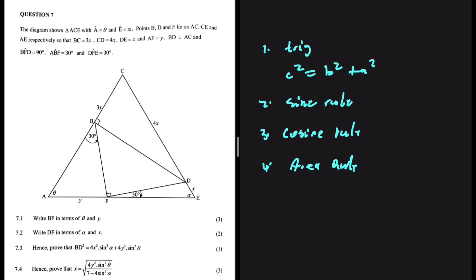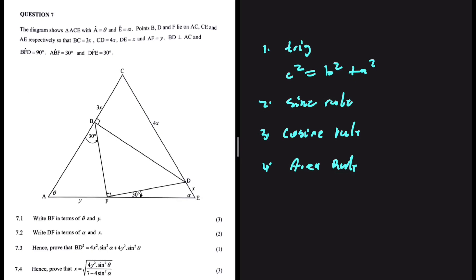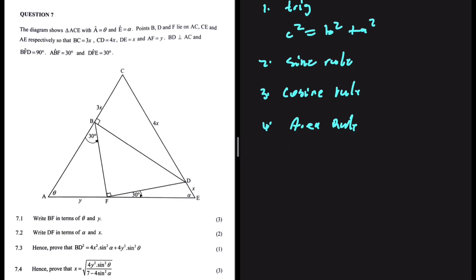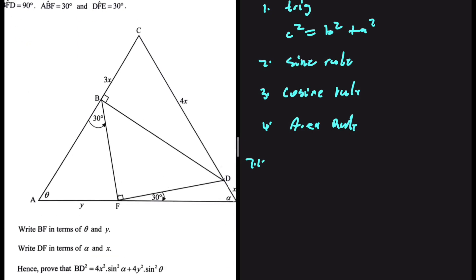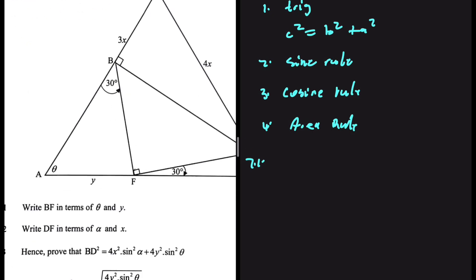Let's see if it is going to work on this question — I know it is going to work, let me show you. Question 7.1: write BF in terms of theta and Y. So let's go ahead and look at BF. BF is this side. Is our triangle right-angled? It is not.